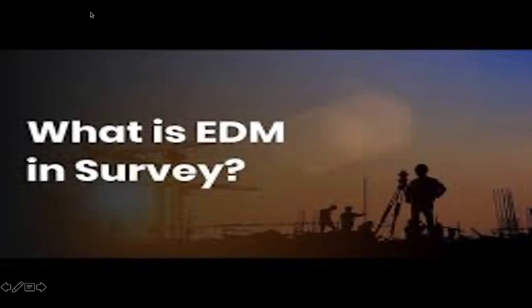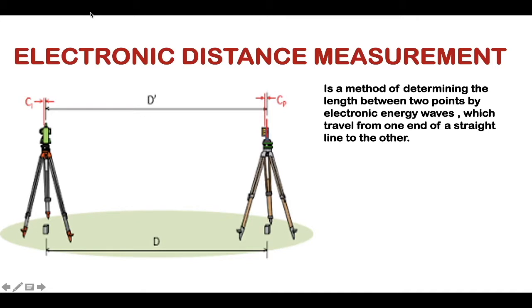Hello, what is EDM in survey? EDM is electromagnetic device measurement which is used to measure distance. In this video we'll study about EDM, types of EDM, and basic principles on which EDM works. Electronic distance measurement is a method in which EDM is used to measure the distance between two points through electromagnetic energy waves like microwaves, radio waves, infrared waves, or other similar waves.